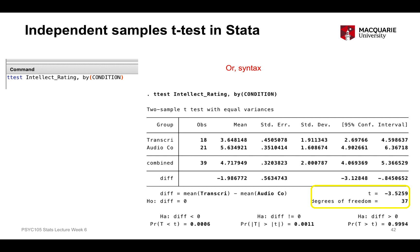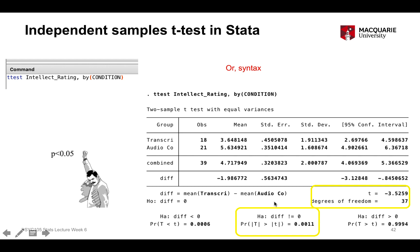So our t-statistic value is 3.52, with 37 degrees of freedom — consistent with our hand calculation. Stata provides three different p-values, and the one we always look at is the middle one, which corresponds to a non-directional alternate hypothesis and a two-tailed test of significance. Our p-value is 0.0011, which is clearly smaller than 0.05, meaning we have a significant result.